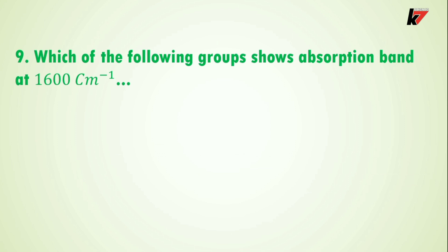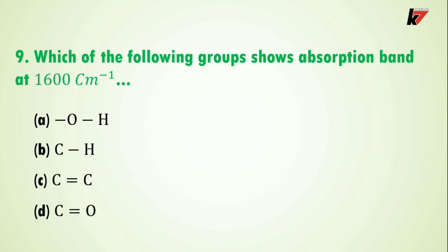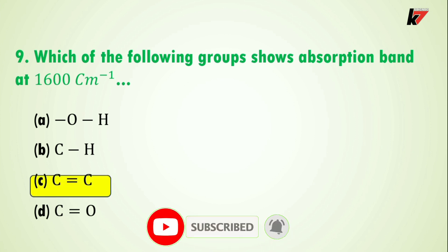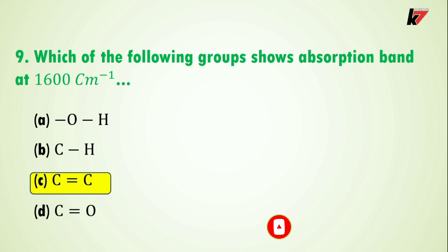Question 9: which of the following groups shows an absorption band at 1600 cm⁻¹? Option A is OH group, option B is C-H group, option C is carbon-carbon double bond, option D is carbon-oxygen double bond. The correct answer is option C: carbon-carbon double bond. If it is aromatic, it will absorb at 1500–1600 cm⁻¹. If the carbon-carbon double bond is an alkene, it will absorb at 1620–1680 cm⁻¹ in the IR spectrum.